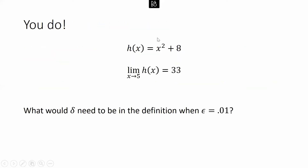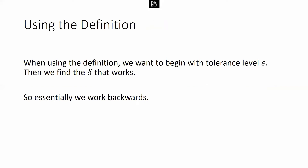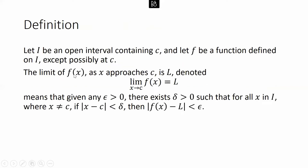Let's go back to the definition. This says: to have the limit of f(x) equal to L as x goes to c means that for any epsilon greater than zero, there exists a delta. Any epsilon greater than zero — not just a specific one — and so we have to leave epsilon as a variable in order to find delta.